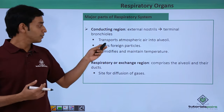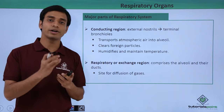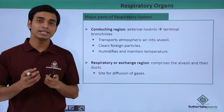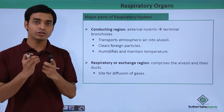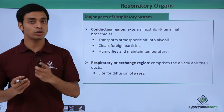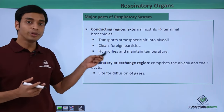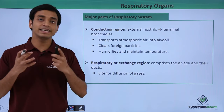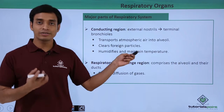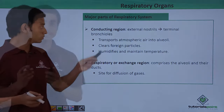The conducting region transports atmospheric air into the alveoli, where gas exchange takes place. It clears foreign particles because it is lined by ciliated epithelium — the hair-like cilia remove any foreign particles entering the trachea. It also humidifies the air, increases moisture content, and maintains air temperature similar to body temperature.